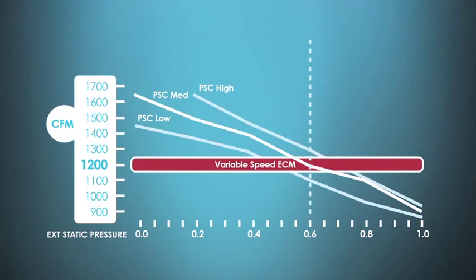However, I should point out — and you can see it on this chart — that we only guarantee that airflow up to around one inch of total external static pressure, because that's the way the manufacturer designs their system. So we will maintain airflow when external static pressure goes up, when filters get dirty, when registers are closed. However, there are even limitations to variable speed motors.